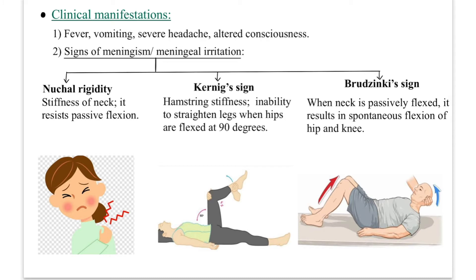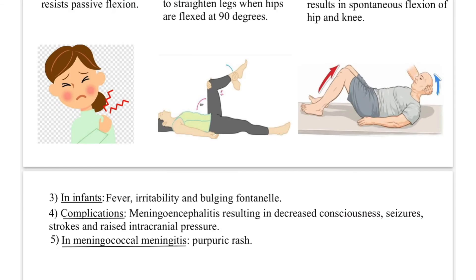Clinical manifestations: general symptoms include fever, vomiting, severe headache, and altered consciousness. Signs of meningism or meningeal irritation — three signs to remember: nuchal rigidity (stiffness of the neck, resisting passive flexion), Kernig's sign (hamstring stiffness causing inability to straighten legs when hips are flexed at 90 degrees), and Brudzinski's sign (passive flexion of neck results in spontaneous flexion of knee and hip). In infants: fever, irritability, and bulging fontanelle.